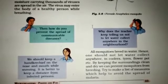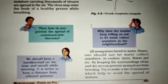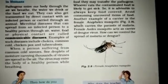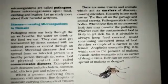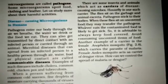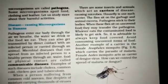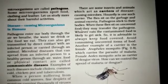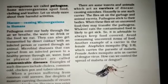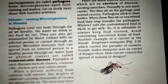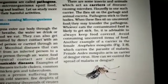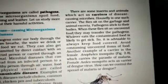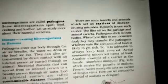There are some insects and animals which act as carriers of disease-causing microbes, for example housefly and mosquito. Houseflies generally sit on garbage, animal excreta, and dead remains, and the pathogens stick to their bodies. When these flies sit on uncovered food, they may transfer the pathogens to the food. Those who eat that contaminated food may get sick. So it is advisable to always keep food covered and avoid consuming uncovered food items.